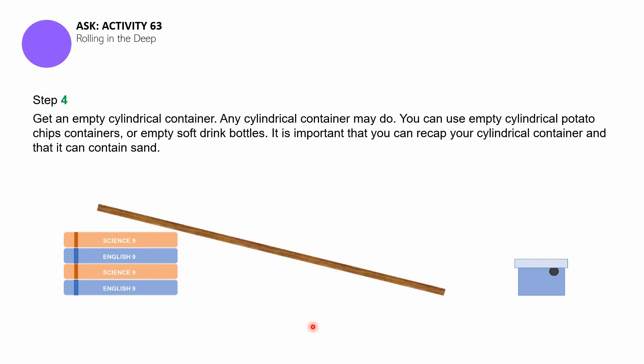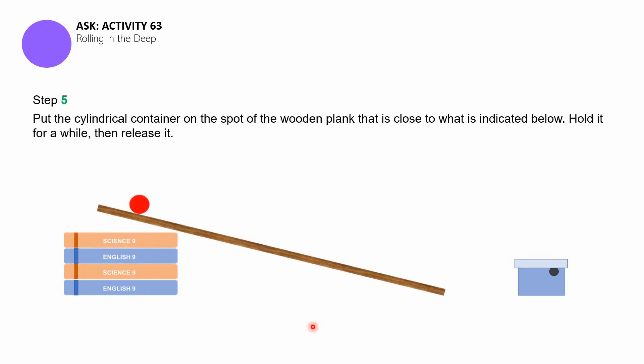For the fifth step, you have to put the cylindrical container on the spot on the wooden plank that is close to what is indicated below. This cylindrical container is empty, it doesn't have sand yet. You have to hold it for a while and then release it. Remember this cylindrical container in this photo in this step is still empty. You have to release it.